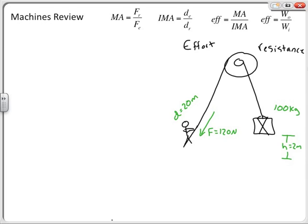First, let's look at the ideal mechanical advantage (IMA), which tells us what multiplier we could potentially get on force. It looks at the ratio of displacements. For a wheel and axle pulley, it's actually a function of the two different radii the ropes go into — so it is a property of the pulley system itself. The IMA is effort displacement divided by resistance displacement: 20 meters divided by 2 meters equals 10. That is a unitless number.